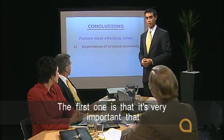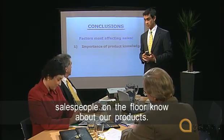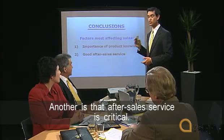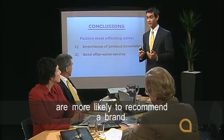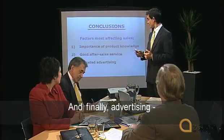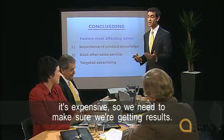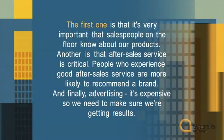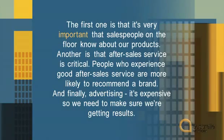Finally, let's look at Tan's conclusions. 'The first one is that it's very important that salespeople on the floor know about our products. Another is that after-sales service is critical. People who experience good after-sales service are more likely to recommend a brand. And finally, advertising: it's expensive, so we need to make sure we're getting results.' Notice how Tan uses signals for his conclusions — his audience can clearly hear that there are three. He says 'the first one,' 'another,' and 'finally.' Notice also how Tan uses adjectives to make his points — you shouldn't use the same words all the time. The adjectives are: important, critical, and expensive.